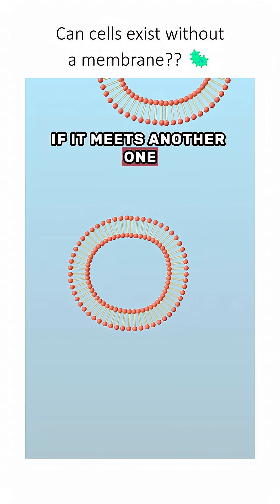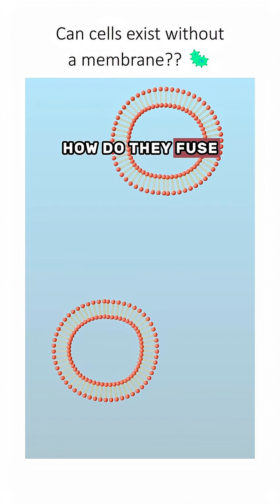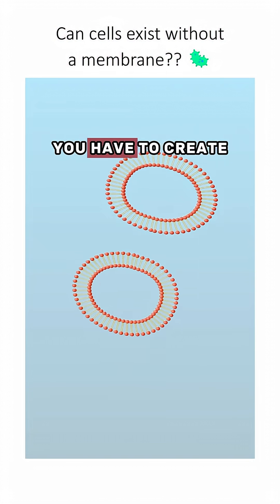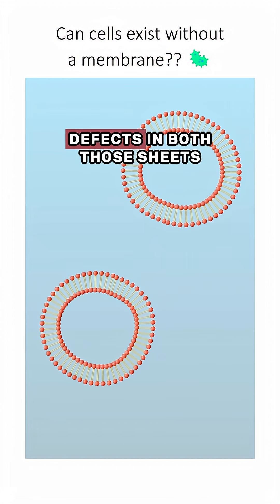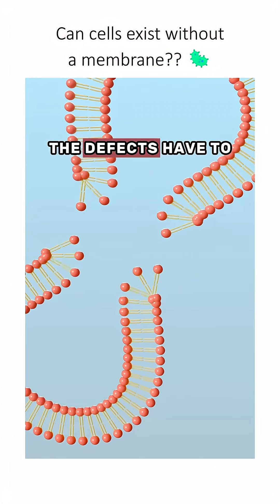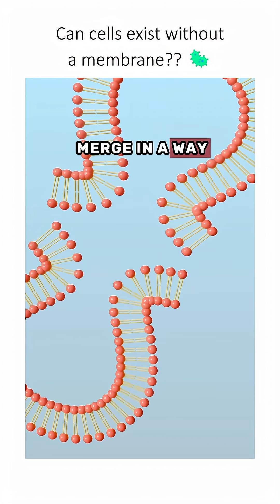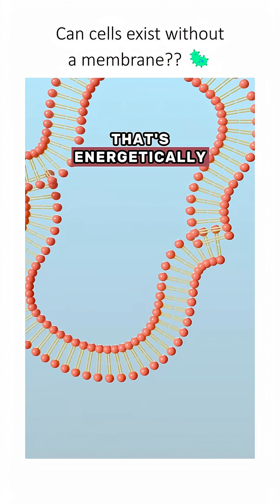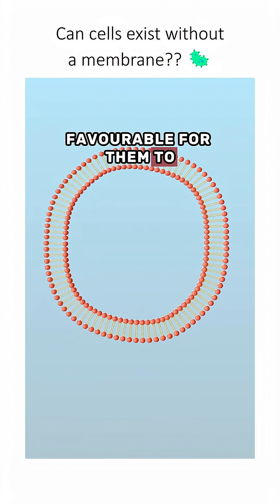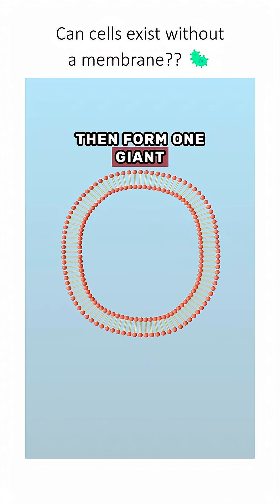If it meets another one, how do they fuse with each other? You have to create defects in both those sheets. The defects have to merge in a way that's energetically favourable for them to then form one giant 2D sheet.